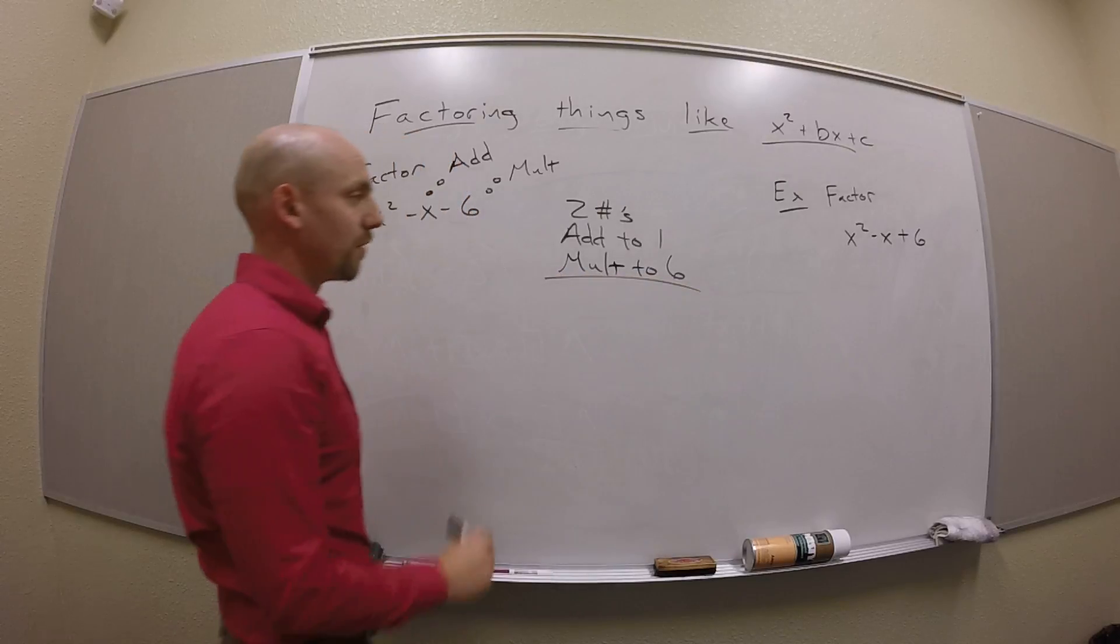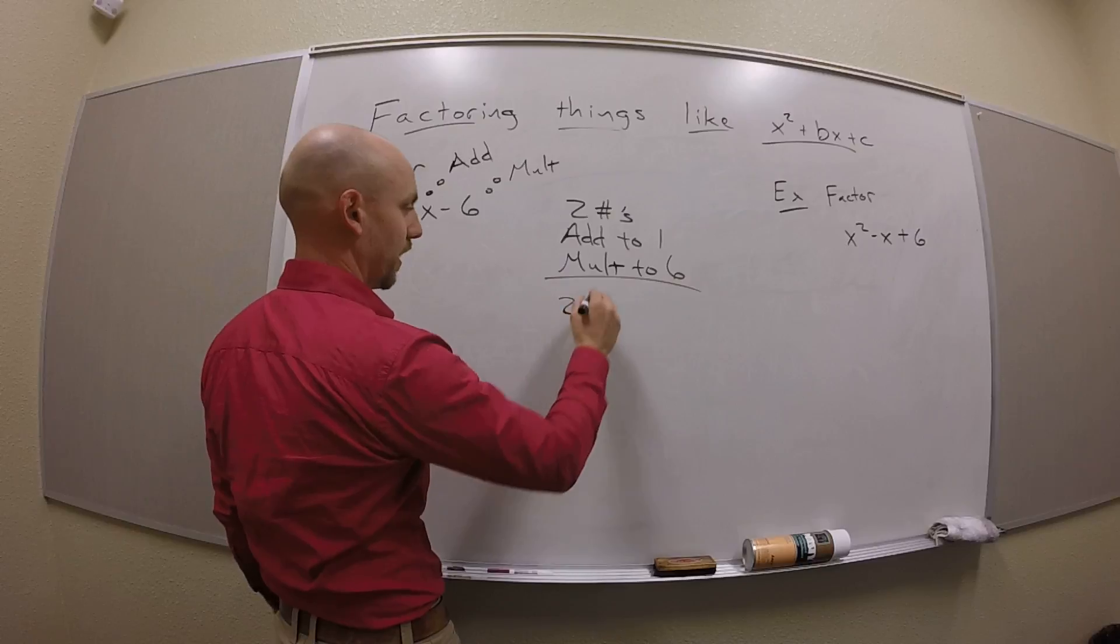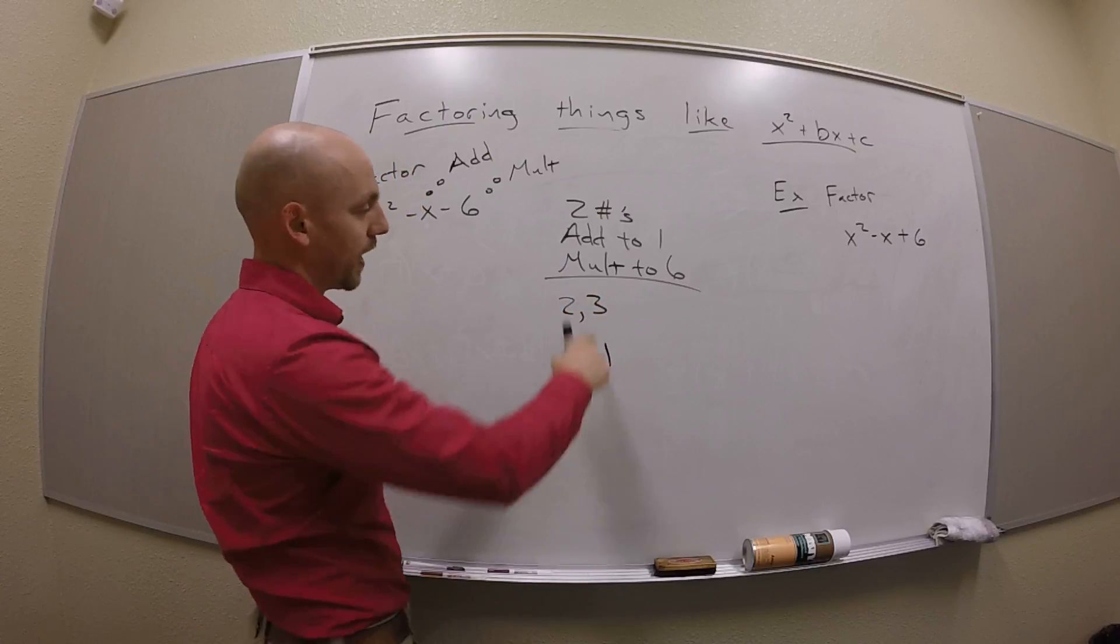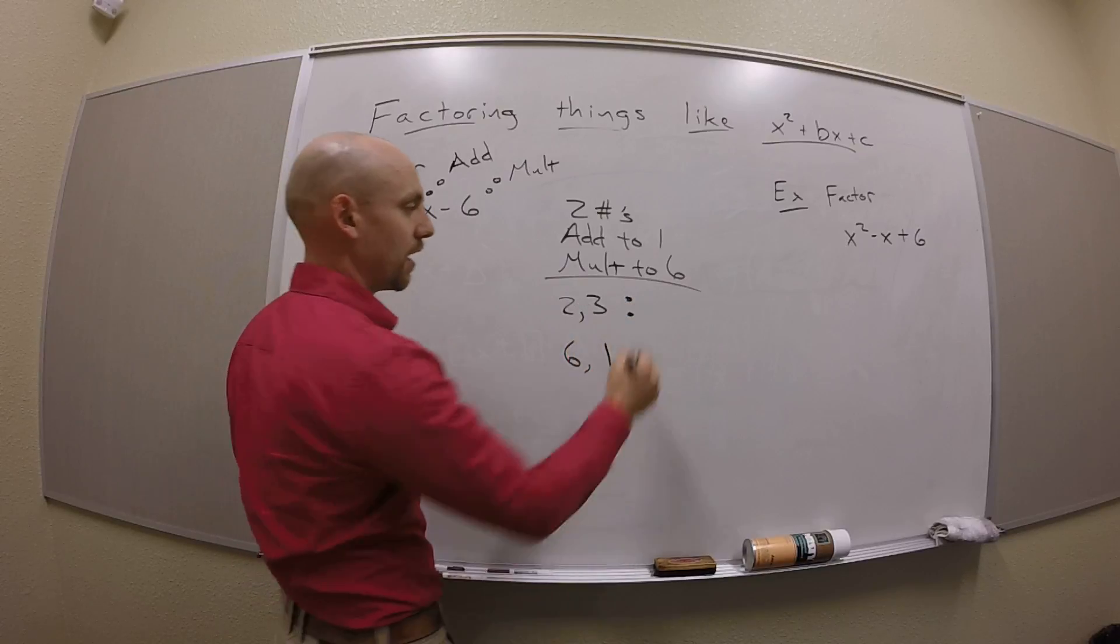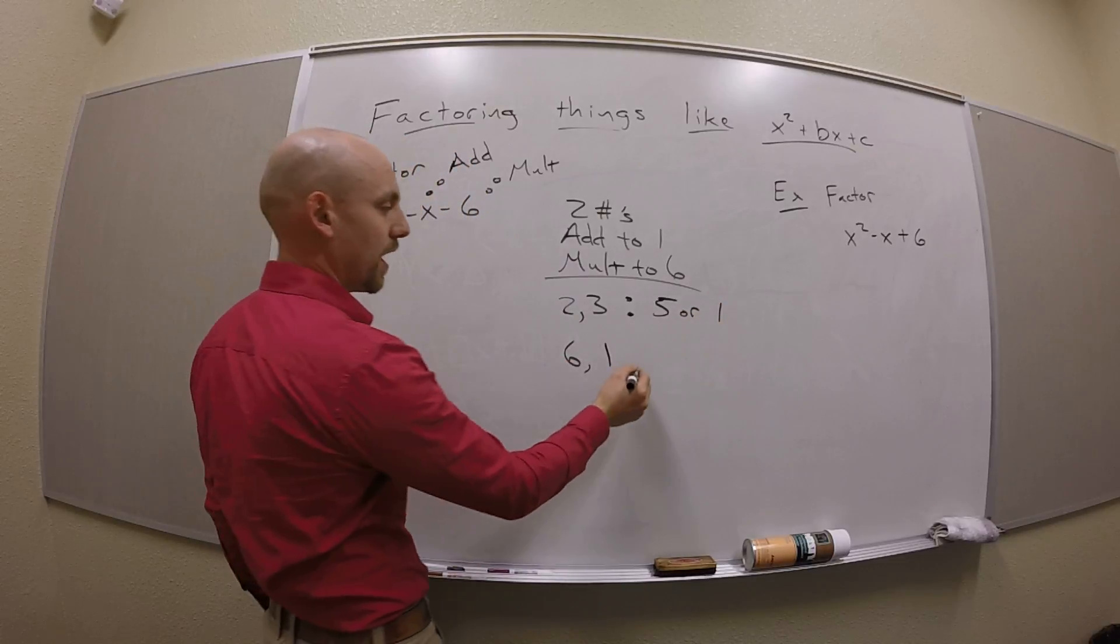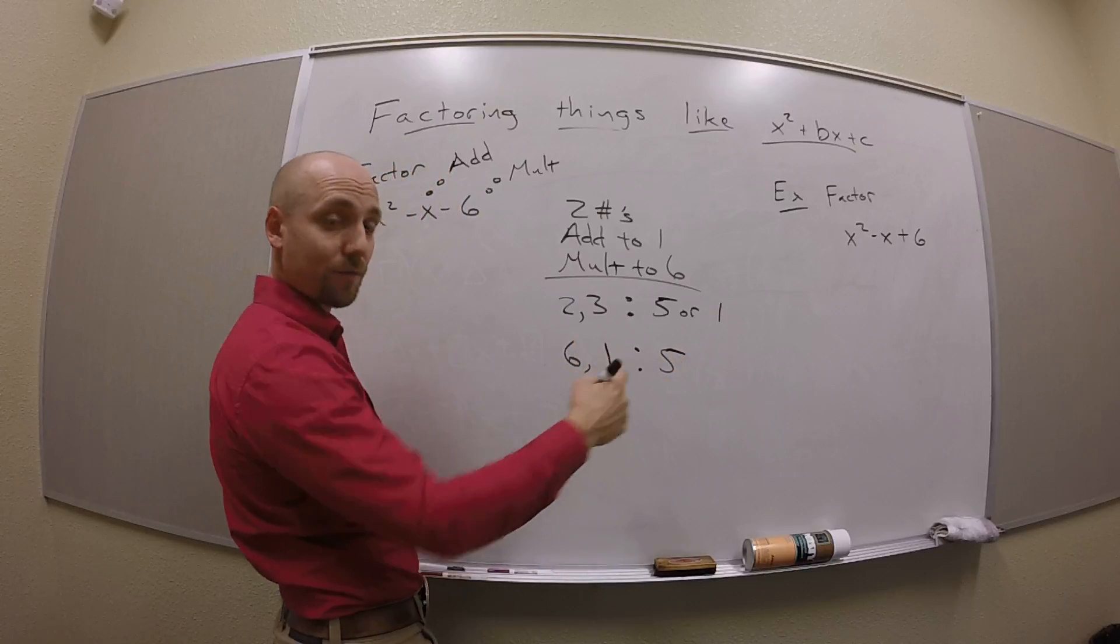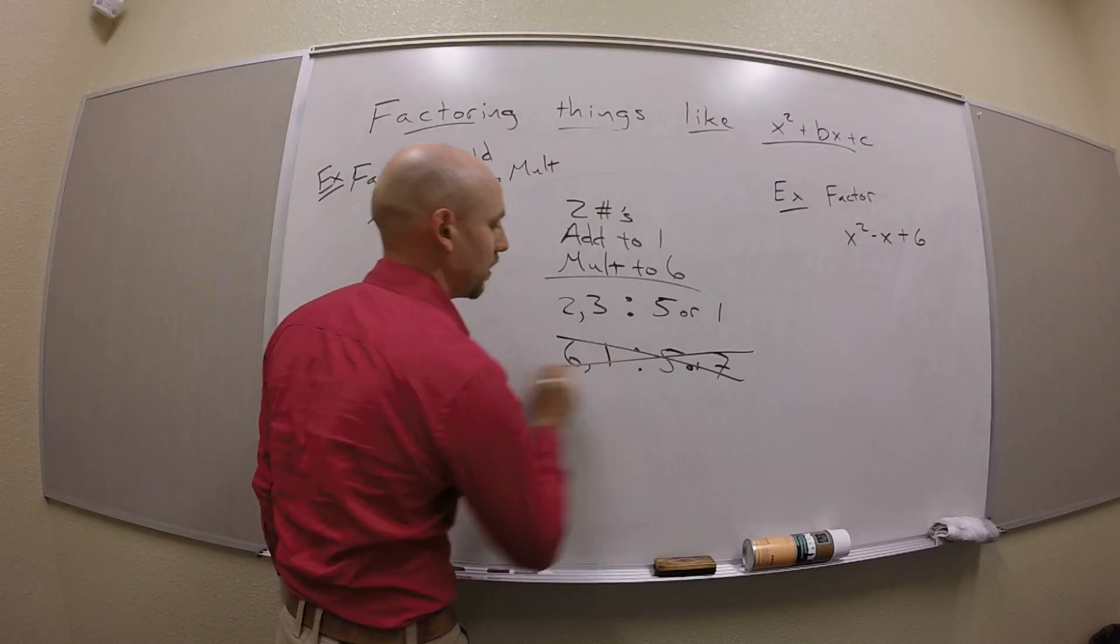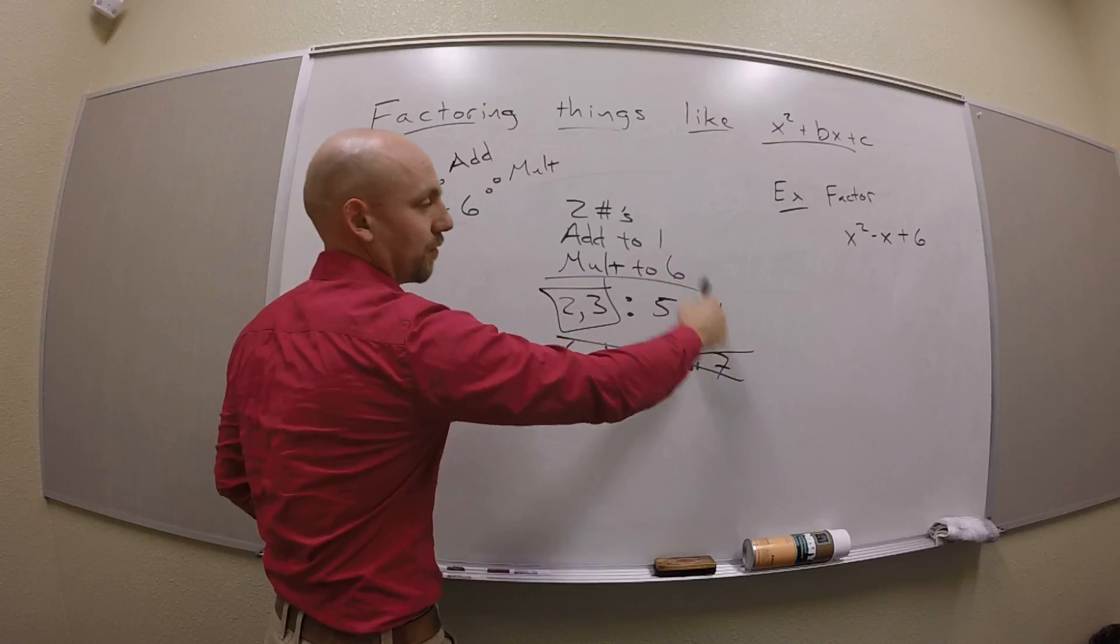So numbers that multiply together to 6 are what? 2 and 3, or 6 and 1. Now, if I add and subtract 2 and 3, I could get either 5 or 1. And if I add and subtract 6 and 1, I could get either 5 or 7. That one didn't work. This one's the one I'm looking for, because that has a 1 in it, that I was trying to add to.